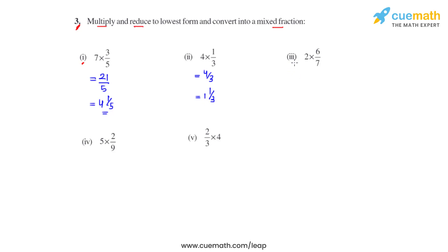Coming to the third bit, we have 2 times 6 over 7. The product of these two will be 12 over 7. When we divide 12 by 7 we get the quotient as 1 and the remainder as 5. So the mixed fraction for this will be 1 and 5 over 7.